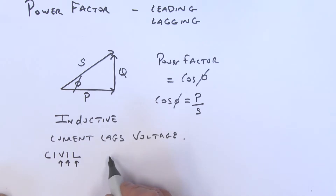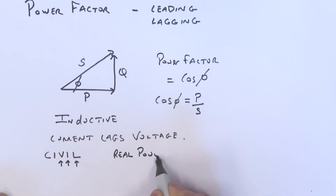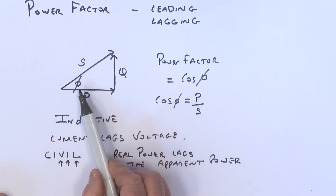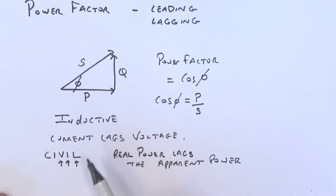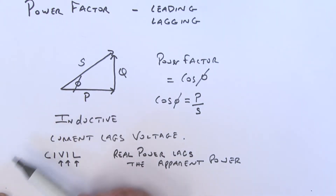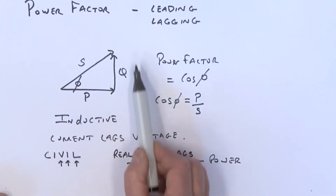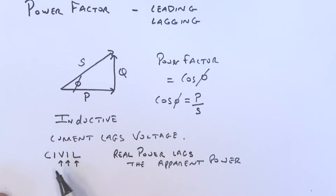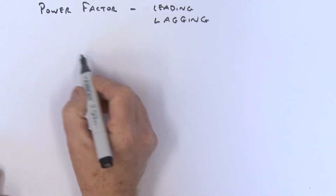In this case we talk about this as a lagging power factor. Another way to identify this is to say that the real power lags the apparent power. So you can describe it in terms of current lagging voltage, or in terms of real power lagging apparent power. This is an inductive circuit.